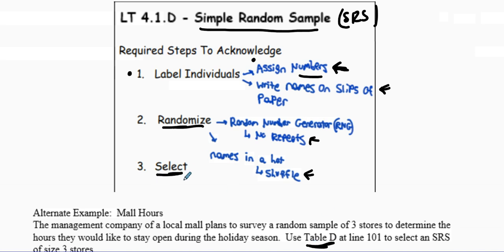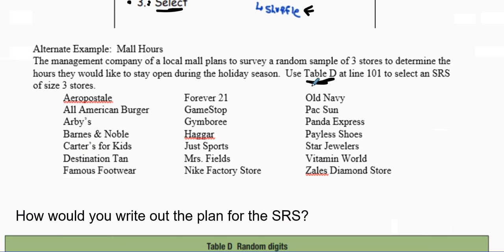Next thing is that we need to state how we're going to select them and what is the procedure for that. So label, randomize, select—those are some key principles whenever we're doing simple random samples. This kind of flows into also when we assign things into experiments, but this is just for sampling.